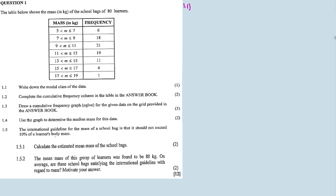If you have a frequency table, you have a modal class. You look for the class with the highest frequency. The class with the highest frequency is the modal class. So if you have a mode and you have a data set, you have a class.